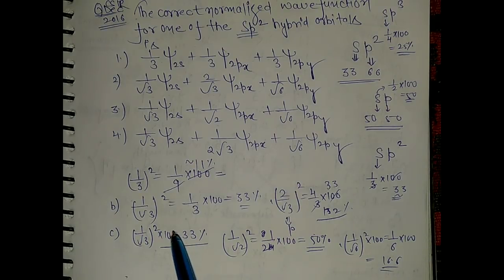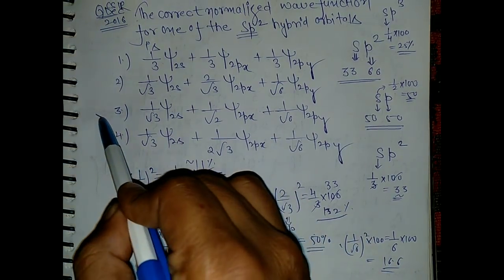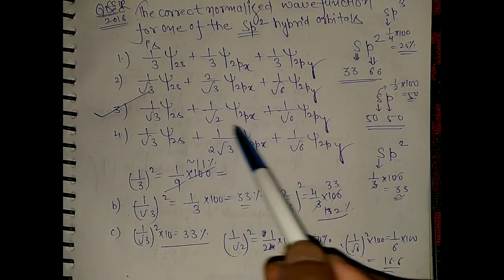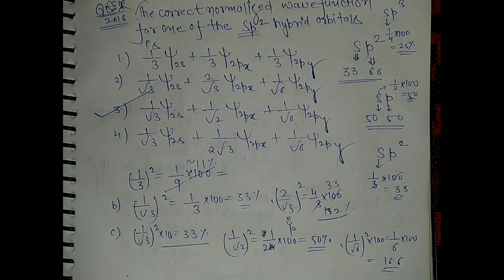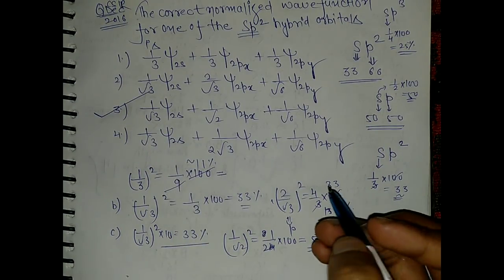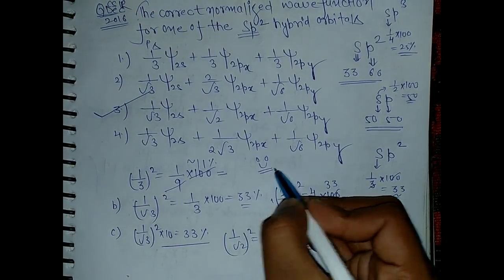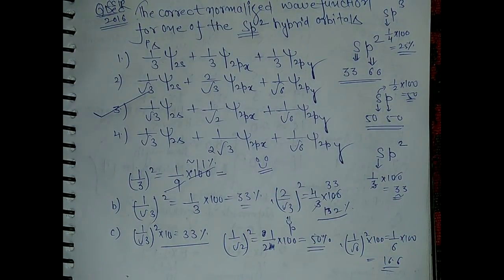And 33% for the s orbitals, so 3 is the right answer and you can do this by yourself now. So this was very easy, you can calculate easily. For the next time thank you and subscribe to the channel if you haven't and bye.